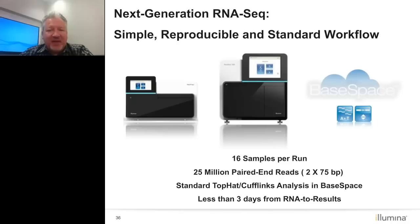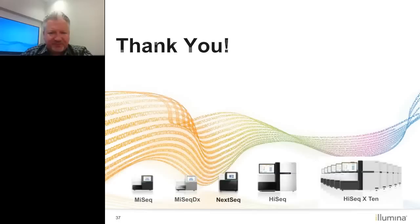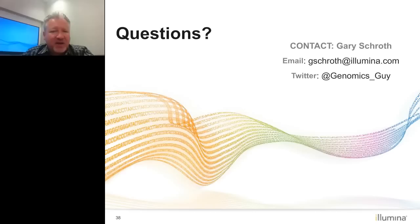This is the workflow we are now recommending for standard RNA-Seq. If you have the NeoPrep system, everybody has access to BaseSpace cloud-based analysis. Load 16 samples on day one, sequence them on day two, analyze them on day three — in essentially a three-day workflow, you can go from starting total RNA to fusion detection. Specifically: 16 samples per run, an average of 25 million paired 2x75 base pair reads, standard TopHat analysis in BaseSpace. Less than three days from RNA to results. I would like to thank everybody for attending and would like to entertain some questions.